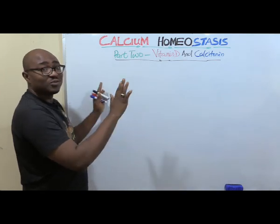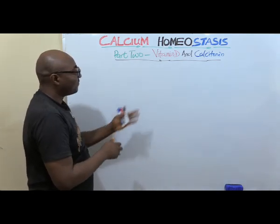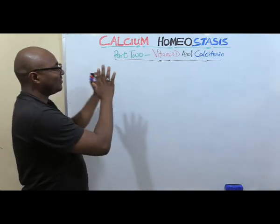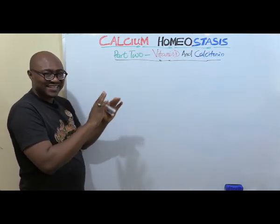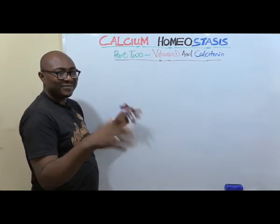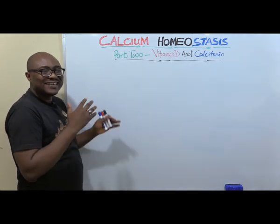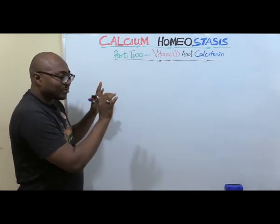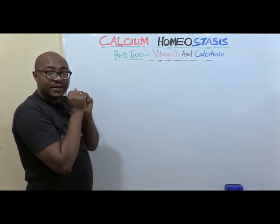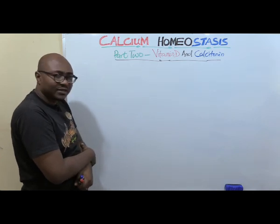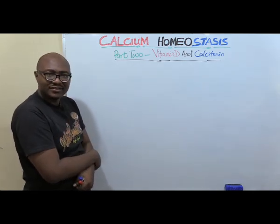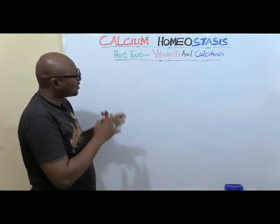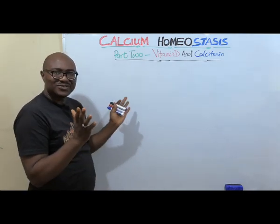This is part two of calcium homeostasis — vitamin D and calcitonin. Now you're familiar with vitamin D; you've heard about it even from primary school — when children lack vitamin D, rickets and so on. So it's not new to you. We're going to be talking about the physiology of it. Why are we discussing a vitamin under hormones? Why not other vitamins? That's the question we should ask ourselves.